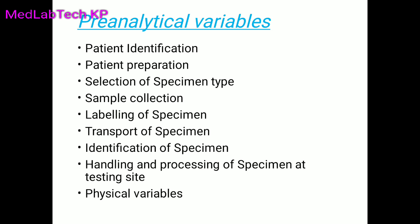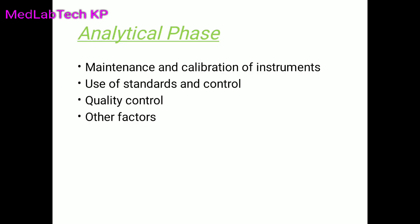The last pre-analytical factor is physiological variables. These include diet, diurnal variation, timing of collection, exercise, gender, age, altitude, stress, posture, and pregnancy. All these physiological factors can cause errors in the pre-analytical phase. This has been a basic overview of pre-analytical factors; more depth will be covered in future videos.